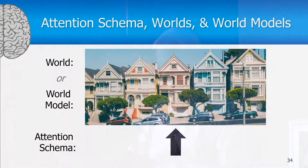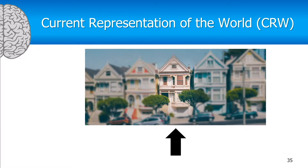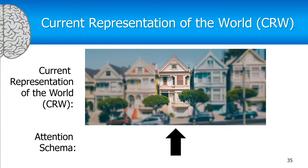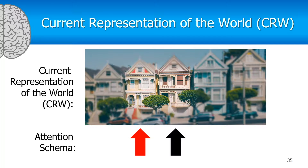There is what I'm calling the current representation of the world, which contains that extra information. There's the model of the world, which doesn't change, but the current representation of the world has extra information in it when you pay attention. So the house in the center has become clearer with more information available. When you shift peripheral attention to the right, that becomes clearer; shifted to the left, that becomes clearer, and back to center. Notice that the current representation of the world — the CRW — changes when attention is being directed around.